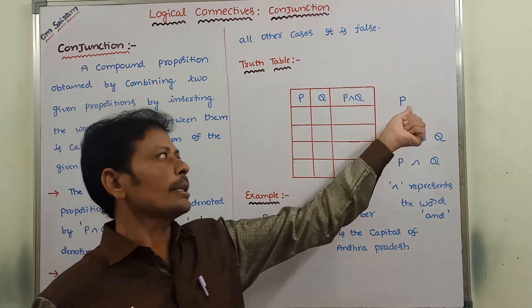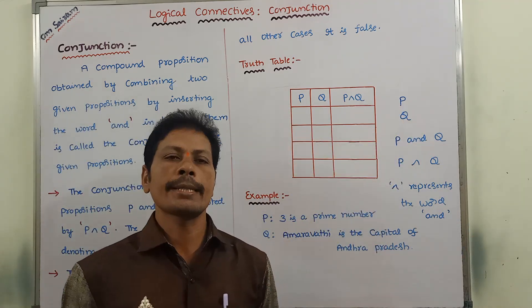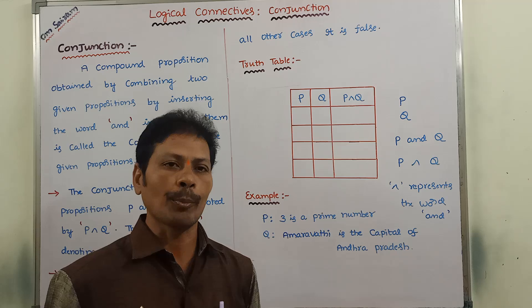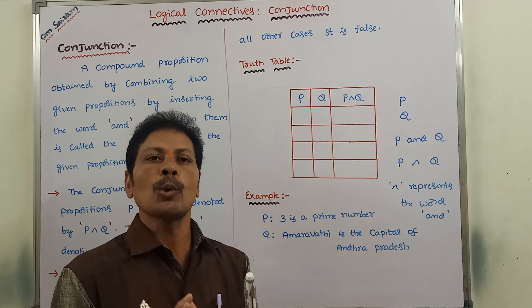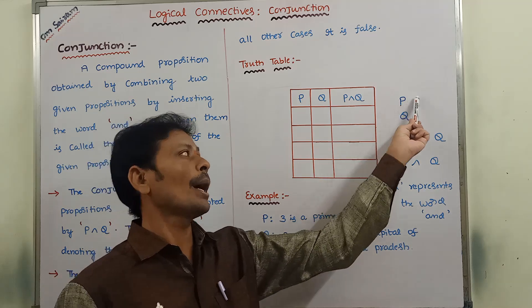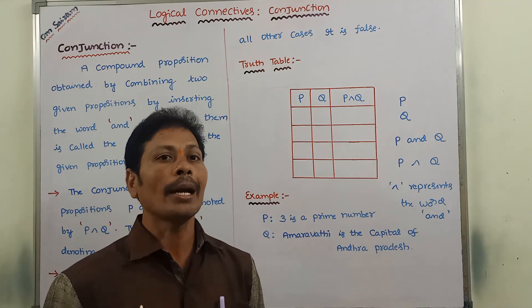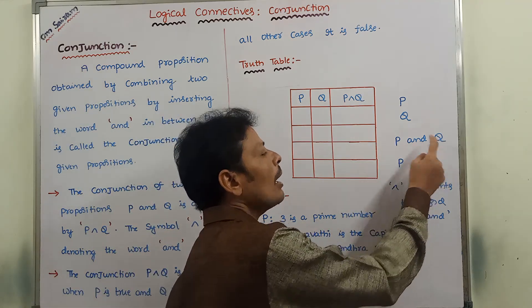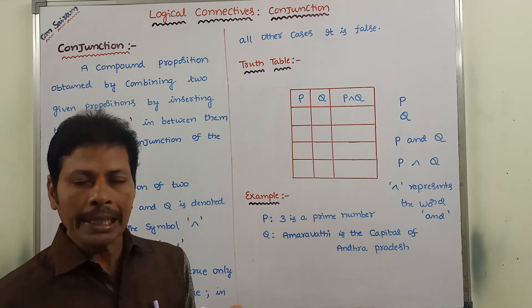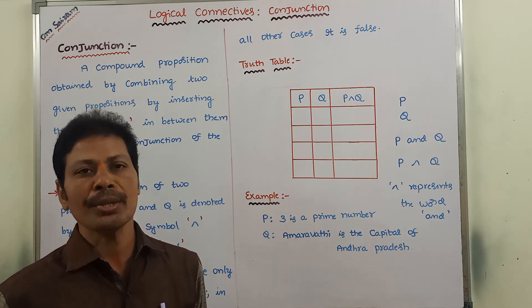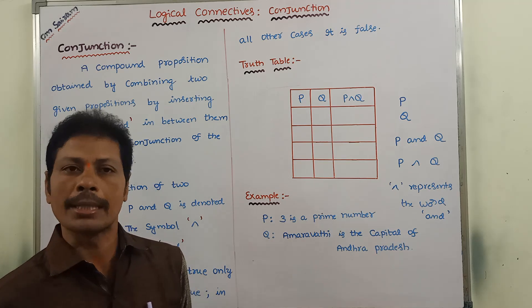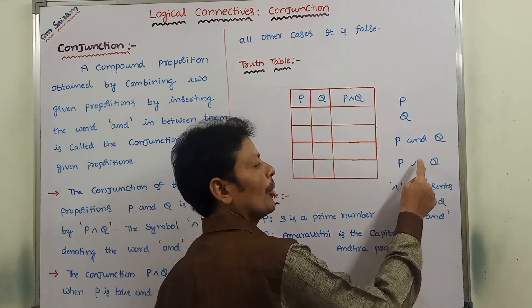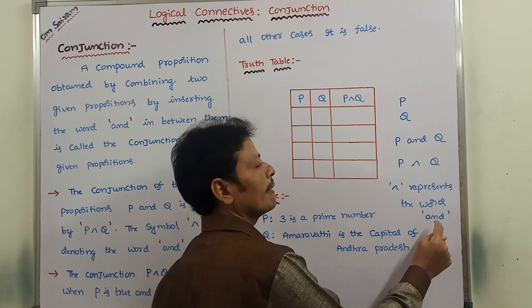When we combine these two propositions using the 'and' connective, we get a compound proposition. A compound proposition is obtained by combining two propositions P and Q by inserting the word 'and' in between them. This is called the conjunction of the given propositions. Symbolically, it can be represented as P ∧ Q, where this symbol represents the word 'and'.